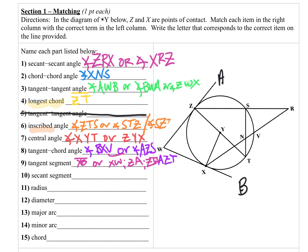A secant segment goes from the farthest point of the secant all the way to the point outside. Looking at the highlighted secant, it would be ZR or RZ. For the other secant, XR, it would be XR or RX. Either way, we'd write it with a bar over top.